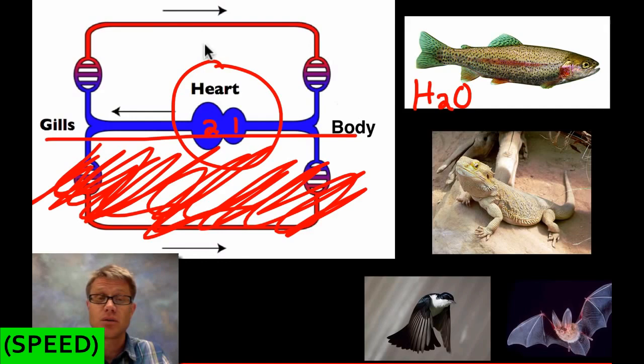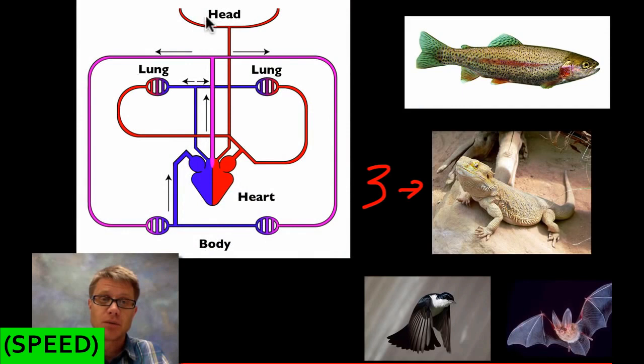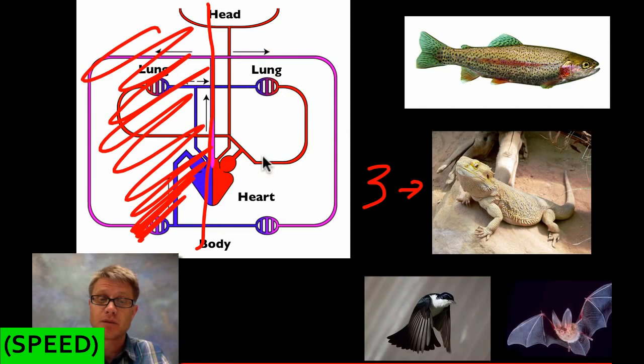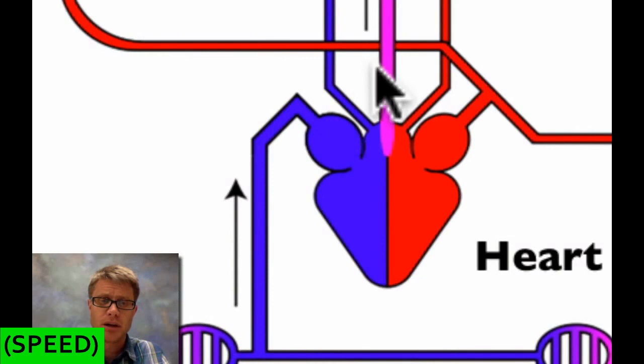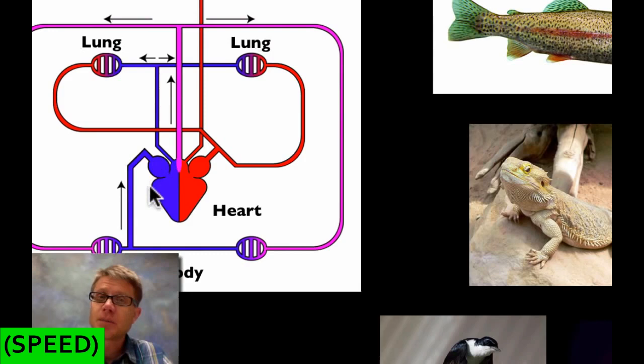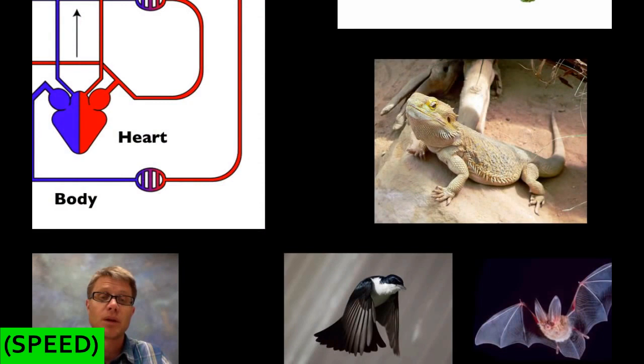One loop works great in water, but when you move to land you lose quite a bit of pressure as blood goes to the lungs. That's why on land we have a three-chambered heart — like in this bearded dragon. Now we have two loops: one that goes to the lungs and comes back, and another that goes to the rest of the body. But interestingly, instead of just red and blue blood, we now have purple blood — a mixing of oxygenated and deoxygenated blood because we only have three chambers.